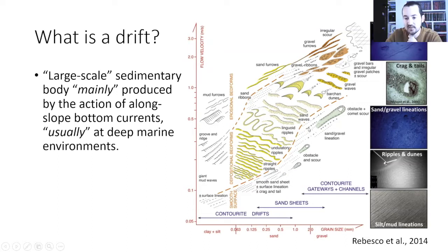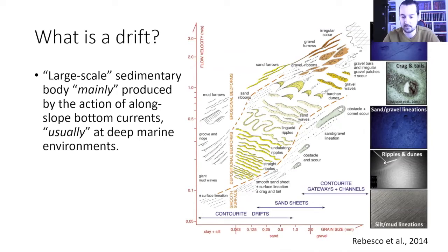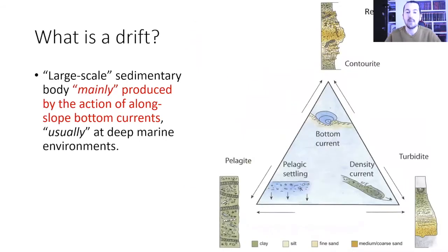In relation to the intensity or velocity of the current, we have different sedimentary structures with different grain sizes. This is going to be interesting because in drifts we have really different facies all the way from clay — which in carbonate drifts will be mudstones — up to grainstone, which is the equivalent of gravel. Then we move to the second part: mainly produced by the action of along-slope bottom currents.